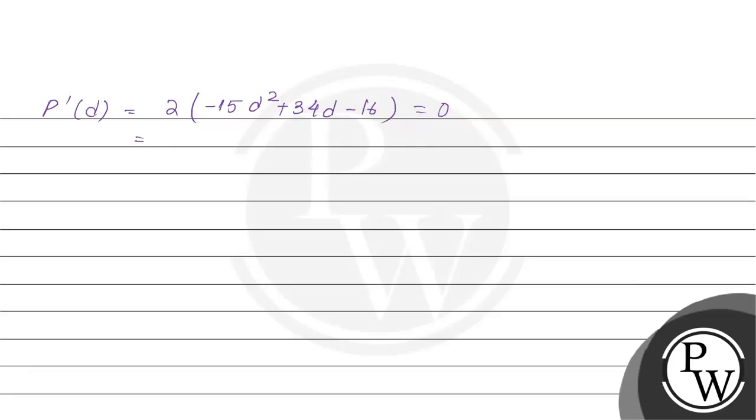If we divide by 2, we get minus 15 D square plus 34 D minus 16 equals 0. If we factor this, then we get 3D minus 2 multiplied with 5D minus 8 equals 0. If we solve for D, then D equals 2 by 3 and 8 by 5.